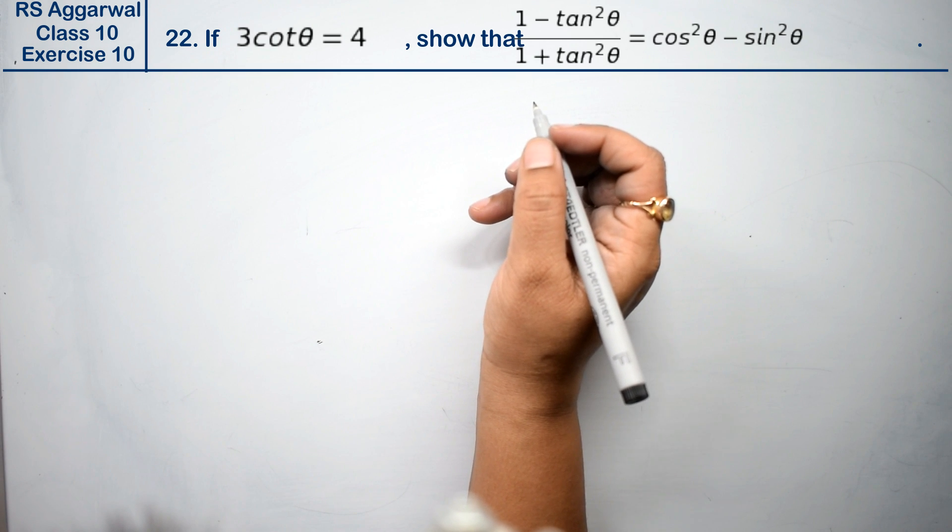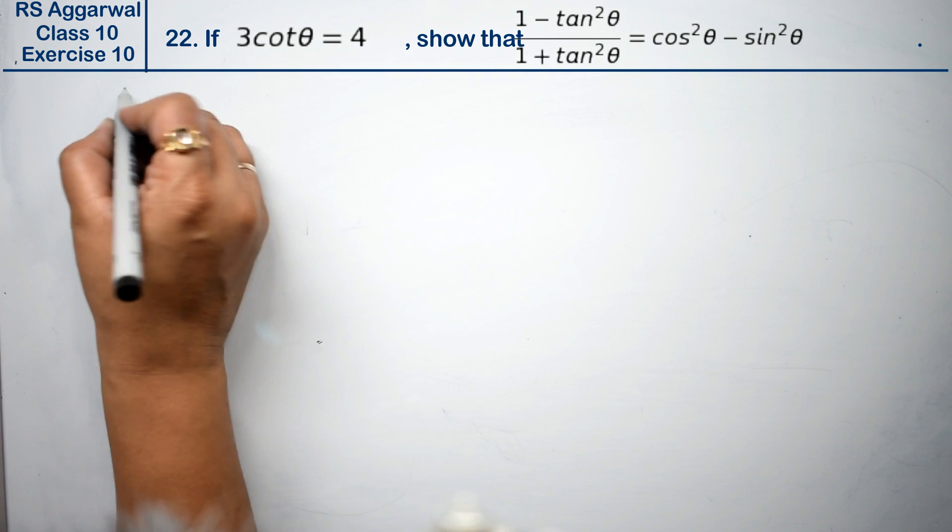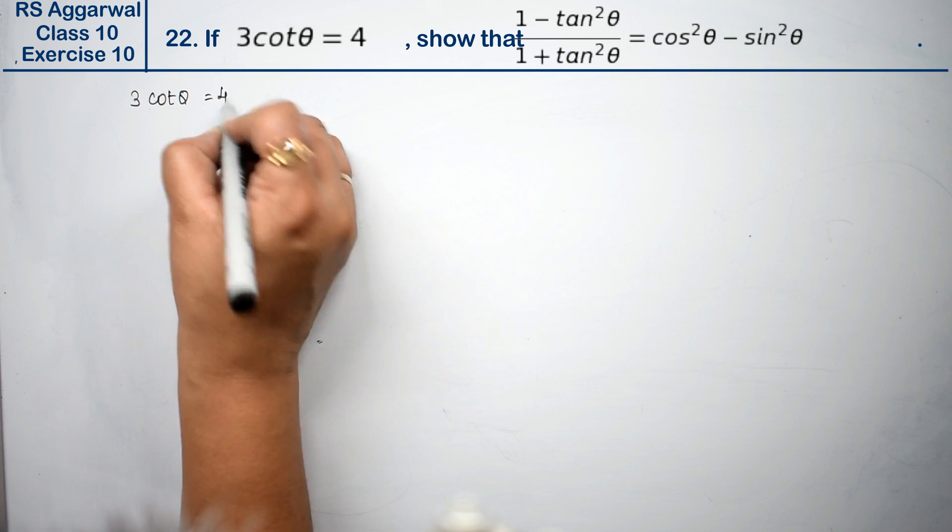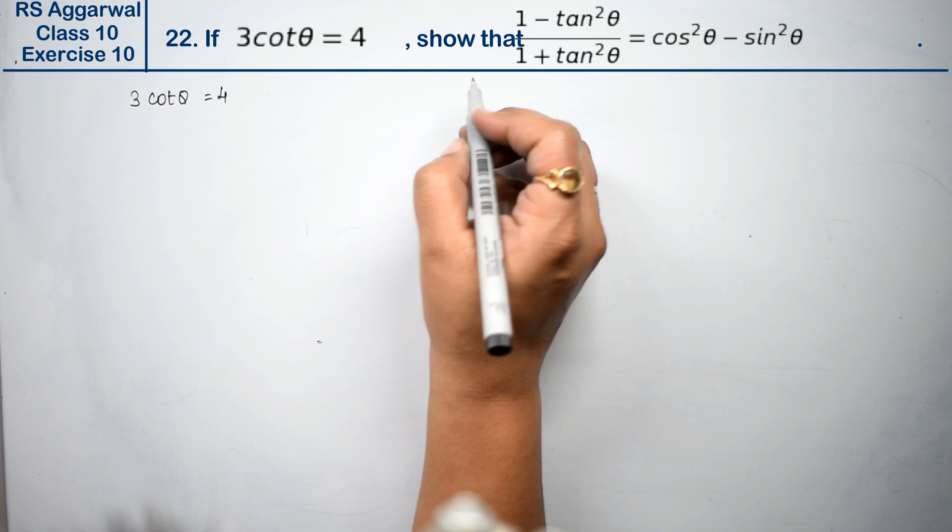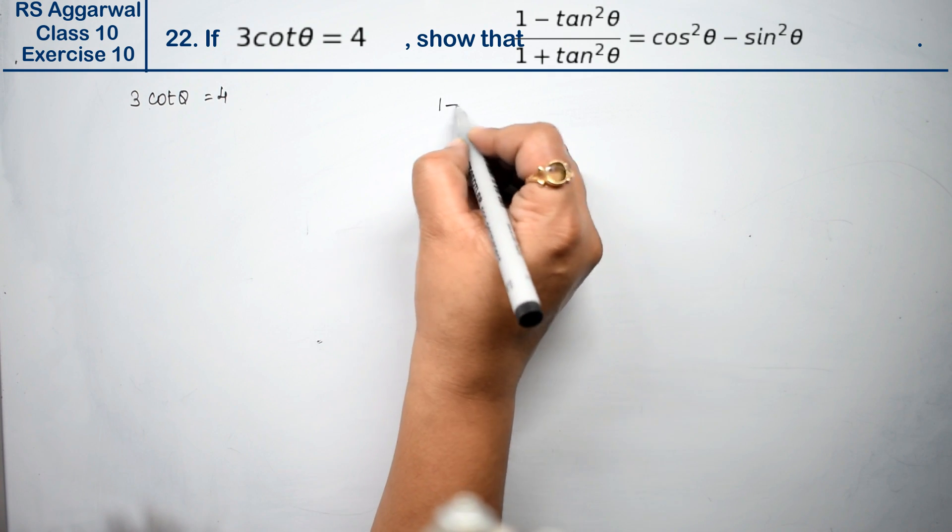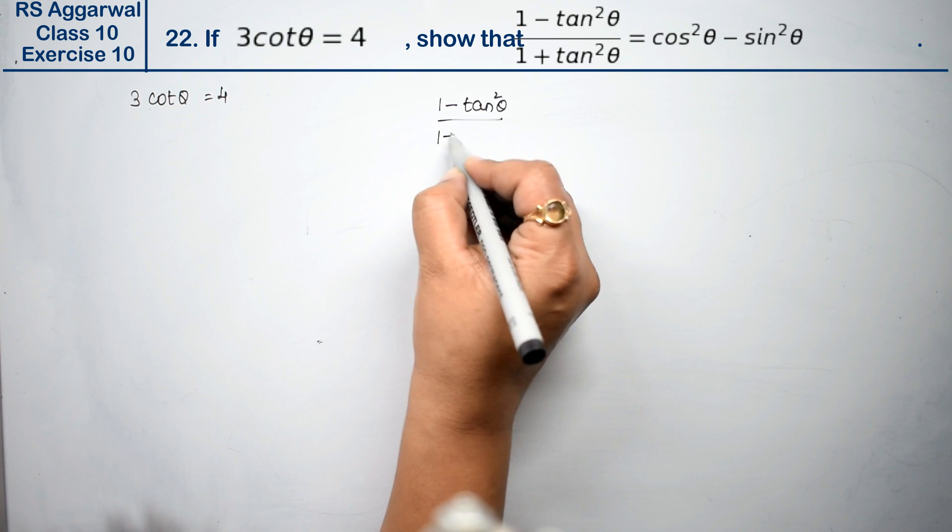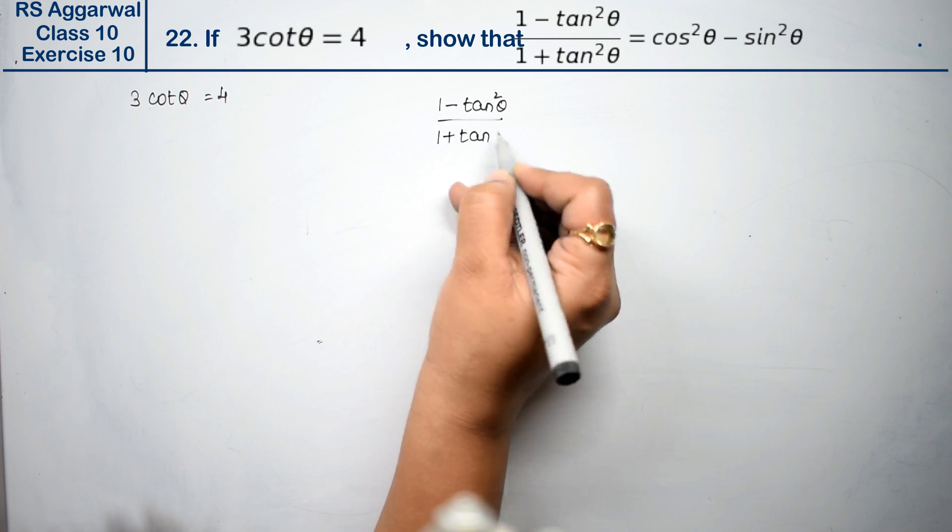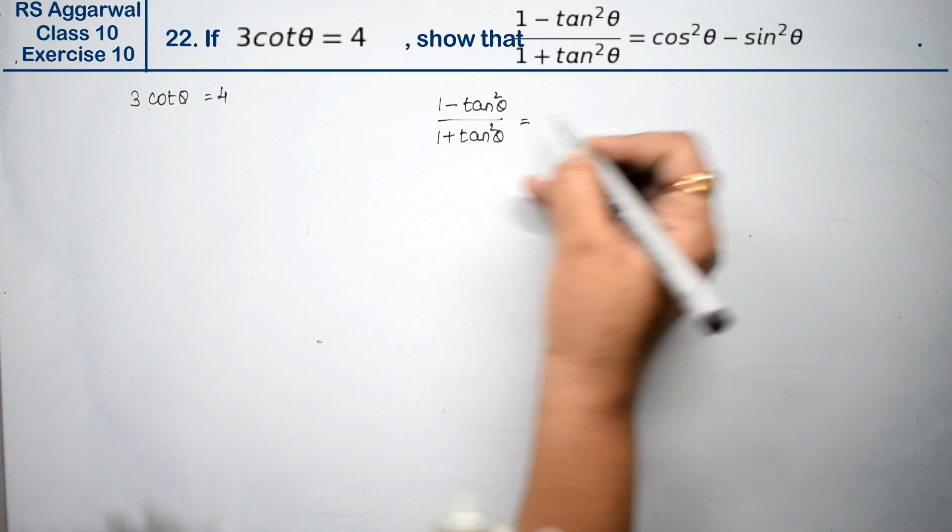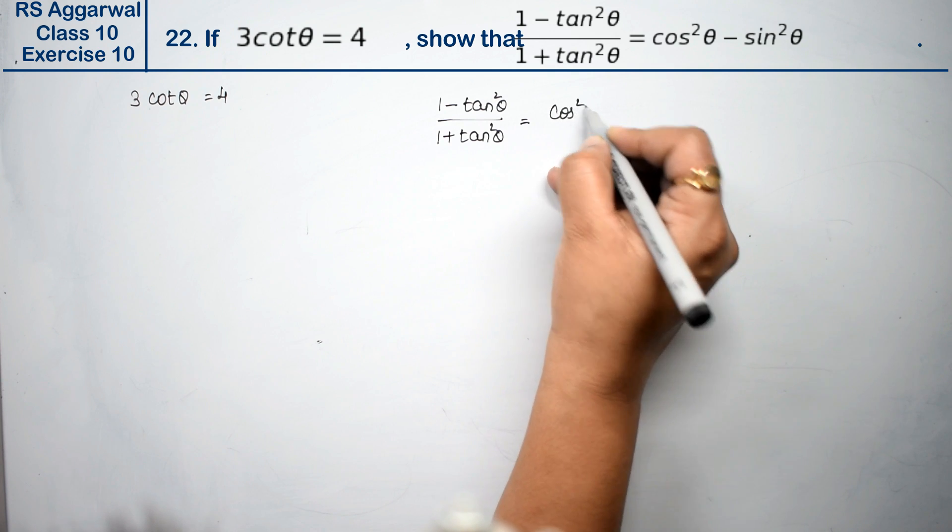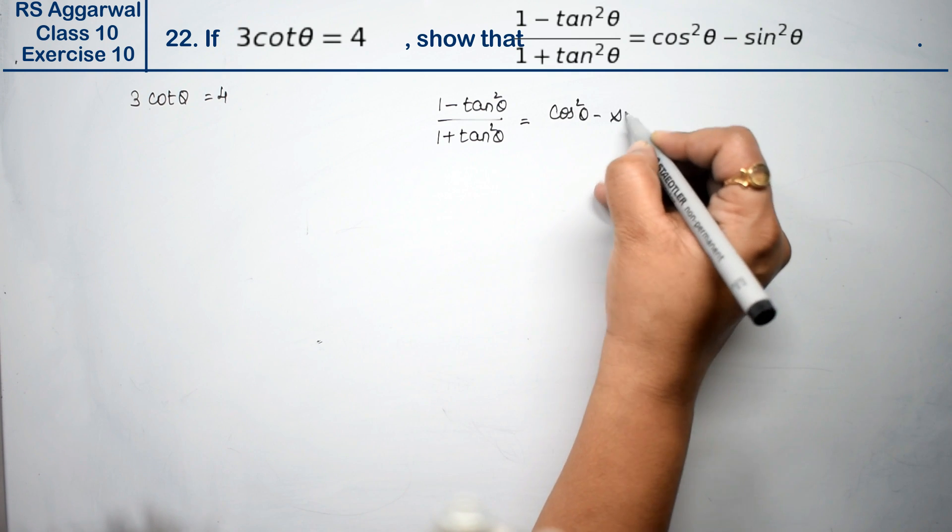Let's do question number 22 of exercise 10, that is trigonometric ratios. Question 22 is: if 3cot θ = 4, then show that (1 - tan²θ)/(1 + tan²θ) = cos²θ - sin²θ. We have to prove this.